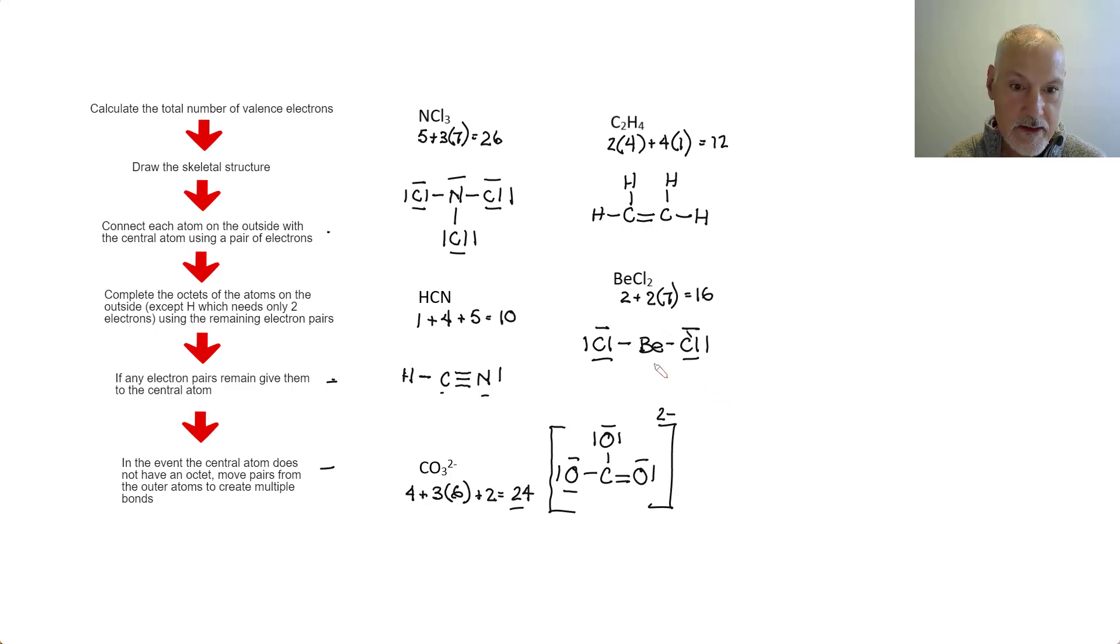Now, if I examine the central atom, beryllium, in this case, it doesn't have an octet. And I might be inclined here to move more pairs in to satisfy it. But alas, beryllium is a rule breaker. Special note of two particular central atoms, beryllium and boron.